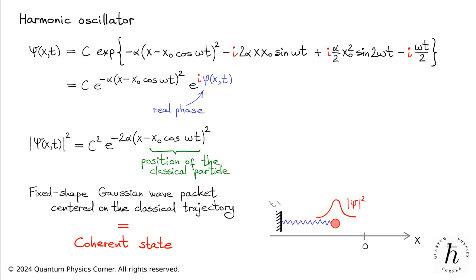As time progresses, first at instant t2 and then t3, the spring extends, causing the particle to move to the right. The coherent state wave packet follows the particle without any distortions.